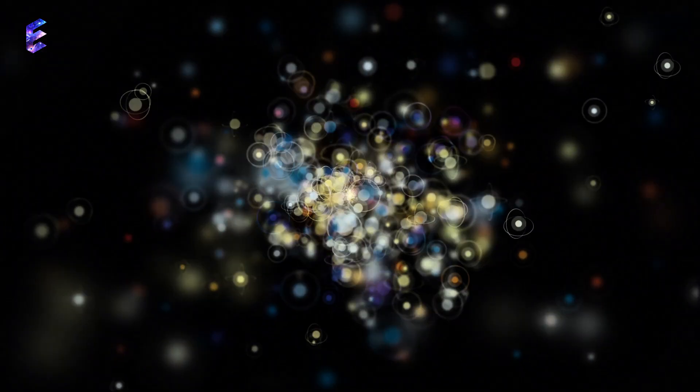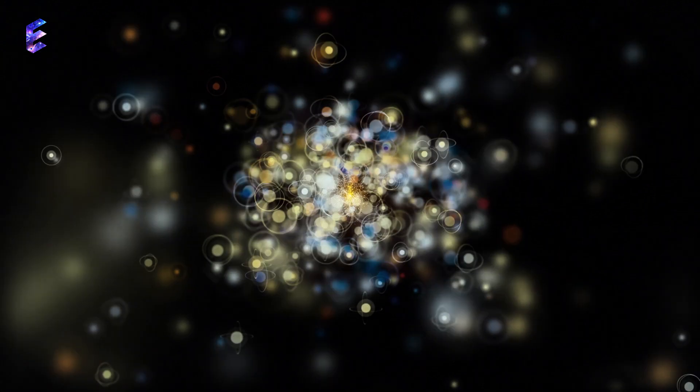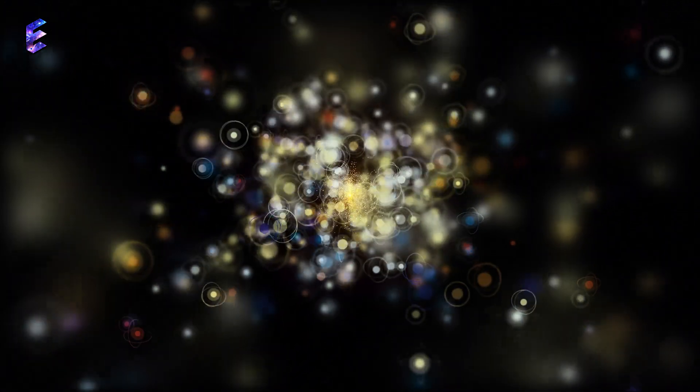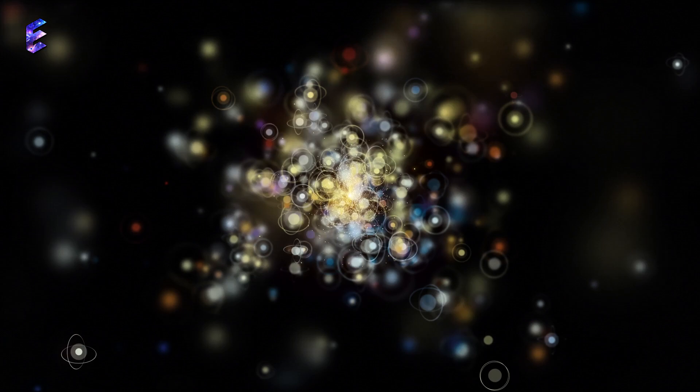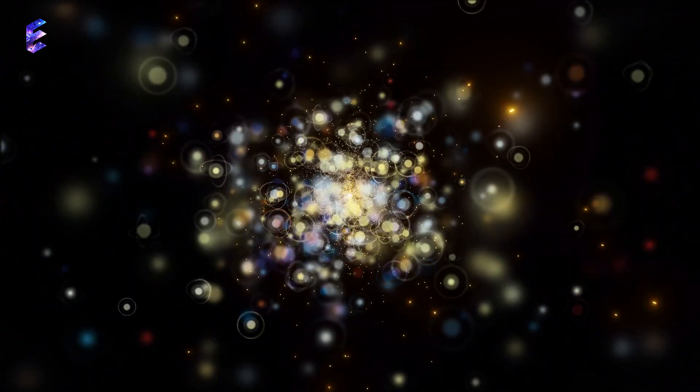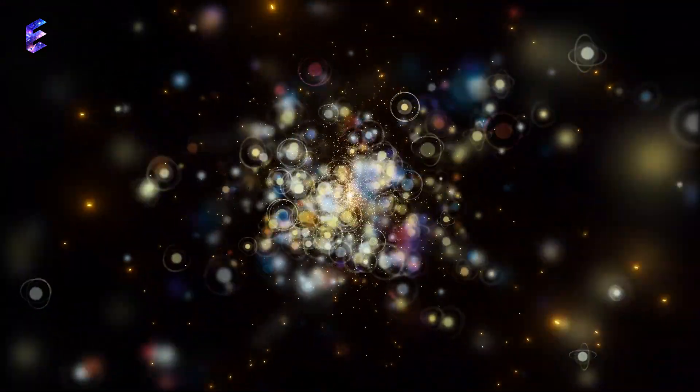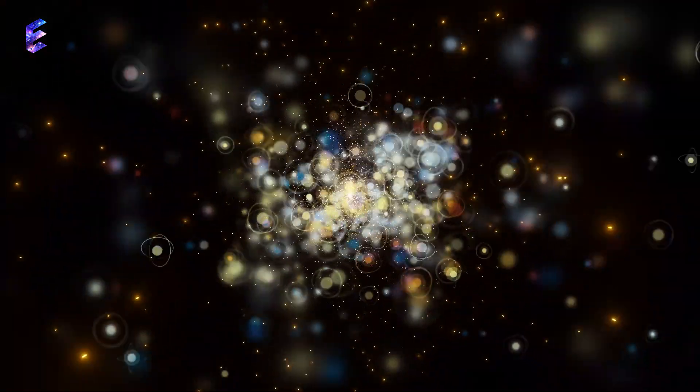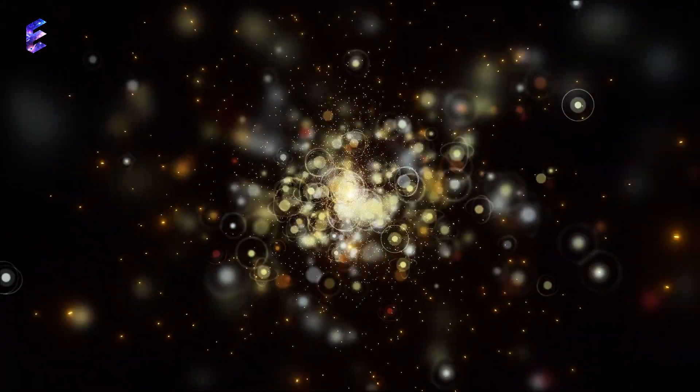Only one second after the Big Bang, the universe was filled with neutrons, protons, electrons, anti-electrons, photons, and neutrinos. The light elements were created during the first three minutes of the cosmos, a process known as Big Bang nucleosynthesis.